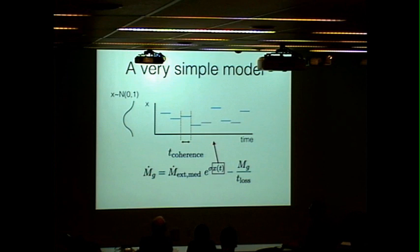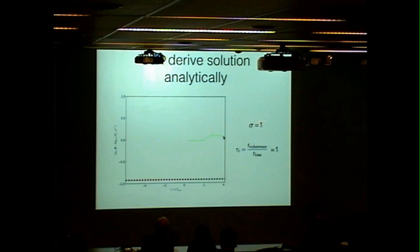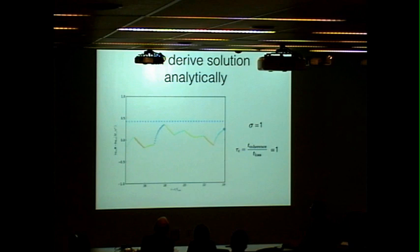So we can derive a solution to this equation analytically, and it depends only on two dimensionless numbers, sigma and the ratio of those two timescales I've defined. And here's how the galaxy behaves. So on the y-axis, I'm showing you the star formation rate, and on the x-axis, I'm showing you time. And these dashed lines are where new values of the accretion rate are drawn. And you can see that the galaxy just sort of monotonically approaches new values of the accretion rate every time a new one is drawn.